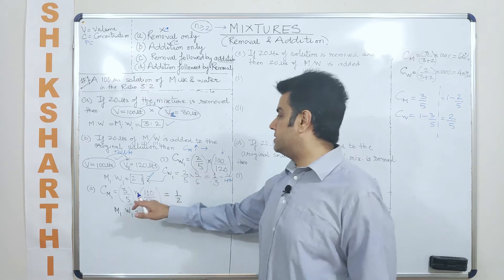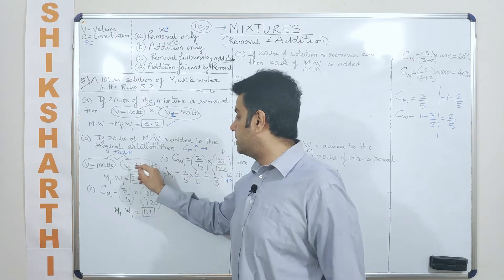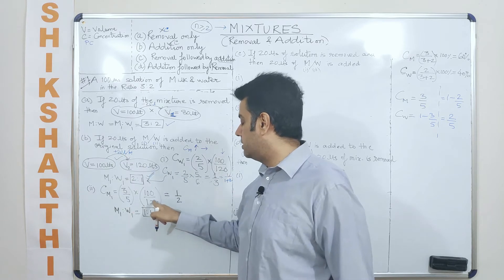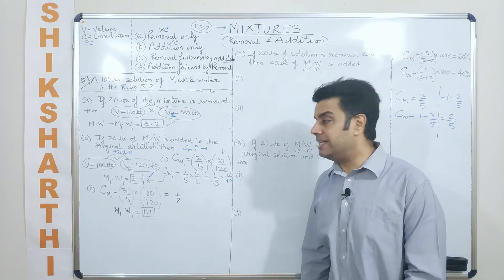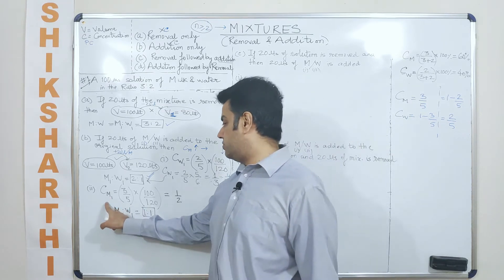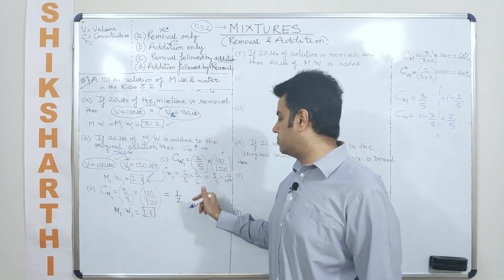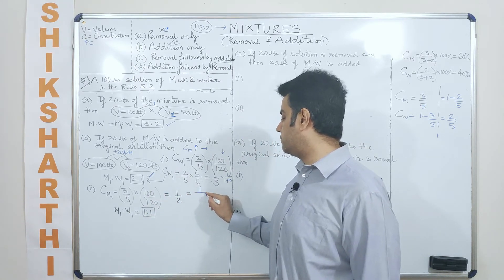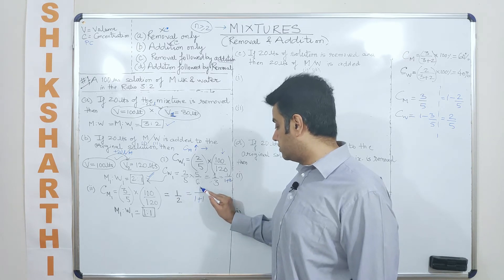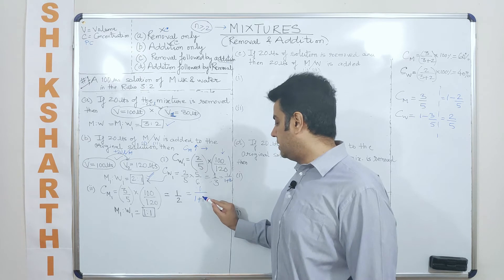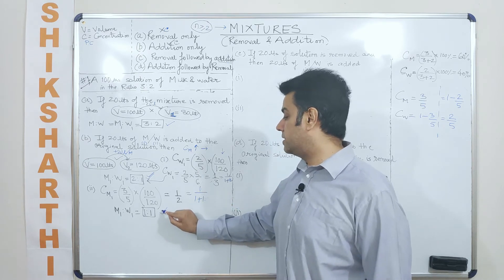In the second case, we are adding water. When water is added, it dilutes the concentration of milk. The concentration of milk is 3/5, and the diluting fraction remains 5/6. So 3/5 multiplied by 5/6 gives 1/2, which is understood as 1 divided by 1 plus 1 — milk is 1 part and water becomes 1 part, giving a ratio of 1:1.